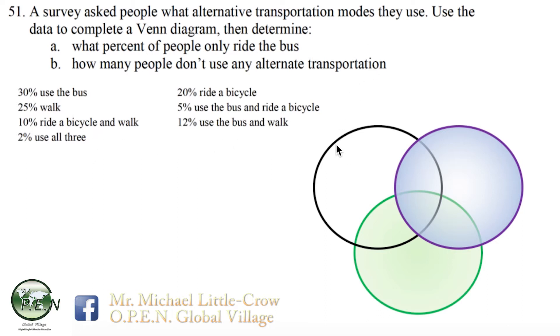We'll start off by labeling each of the circles. We'll call this one use of the bus. Bicycle can go over here, we'll just shorten that up to bike. And then for this circle down here will be walk.